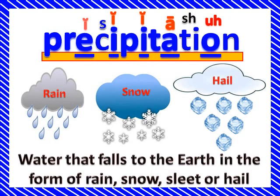Precipitation is water that falls to the earth in the form of rain, snow, sleet, and hail. I've got three of them right there — see the raindrops coming out of the clouds? That's precipitation. Snow, that's precipitation. And hail, that's precipitation.